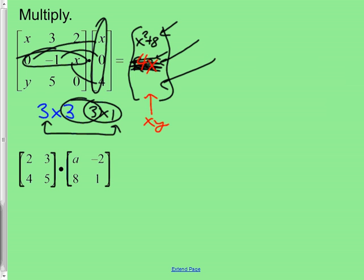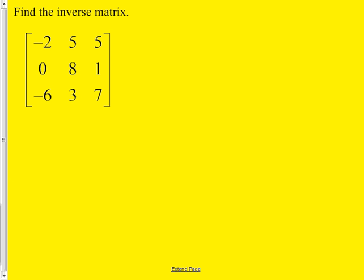Now find the inverse. Doing it by hand would be cruel and unusual punishment — there's no process I've taught you for a 3-by-3 inverse by hand. So grab a calculator, type the matrix in, and raise it to the power of negative 1 — that's what inverse means. Then change it to fractions using the Math button, since decimals are long and you're not allowed to round.